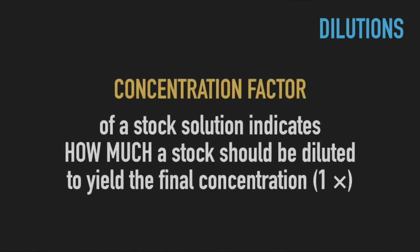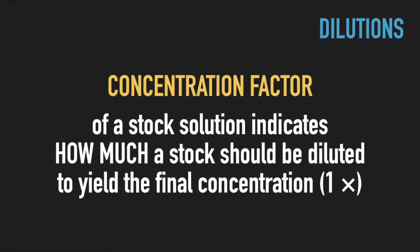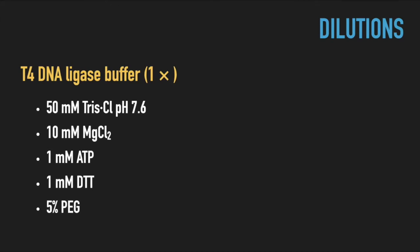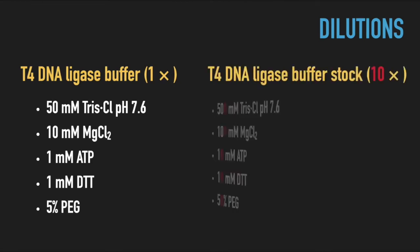Sometimes, the corresponding concentration factors are used to describe buffer stocks to indicate how much they should be diluted. For example, an optimal buffer for the enzyme T4 DNA ligase contains 50 millimolar Tris pH 7.6, 10 millimolar magnesium chloride, 1 millimolar ATP and DTT, and 5% polyethylene glycol. The typical ligase reaction volumes range between 10 and 100 microliters. To let the experimentalists choose the best reaction volume, the T4 ligase buffer stock is provided as a 10 times concentrated solution.